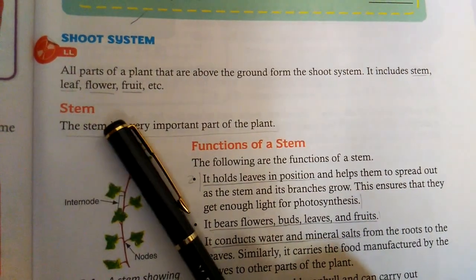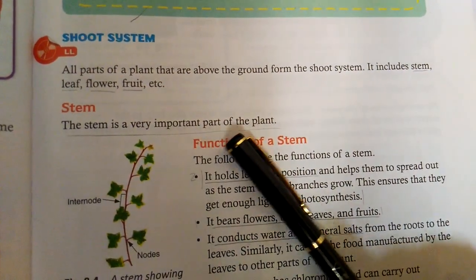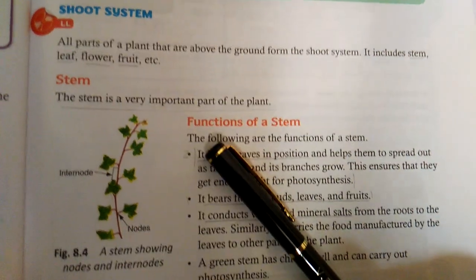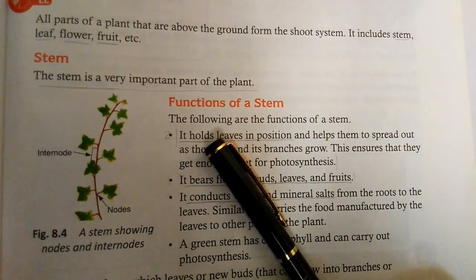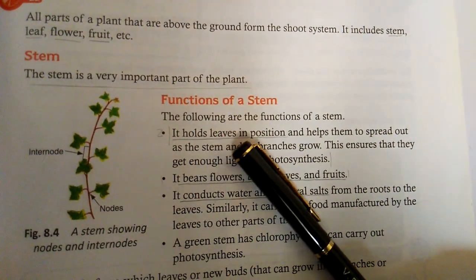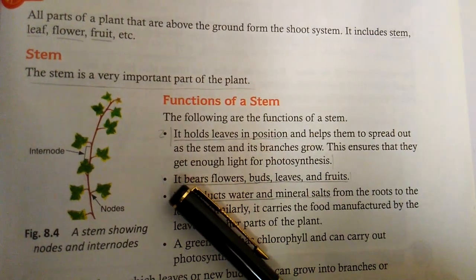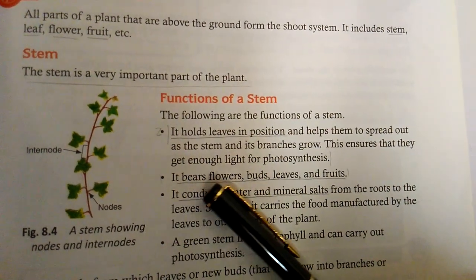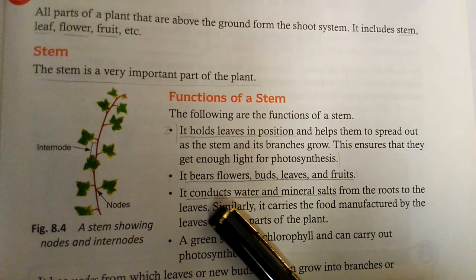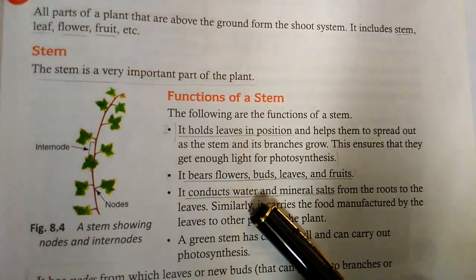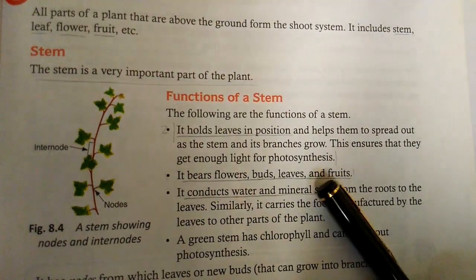The stem is a very important part of the plant. Functions of a stem: it holds the leaf in position, it bears flowers, buds, leaves, and fruits, and it conducts water, minerals, and salts.